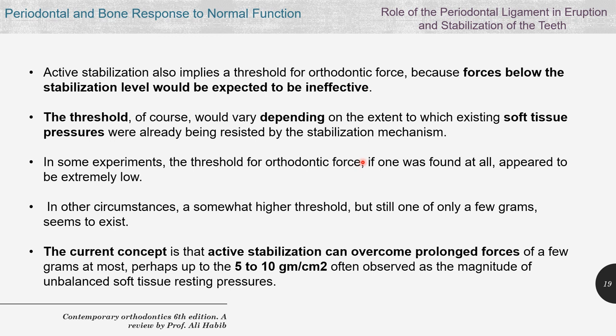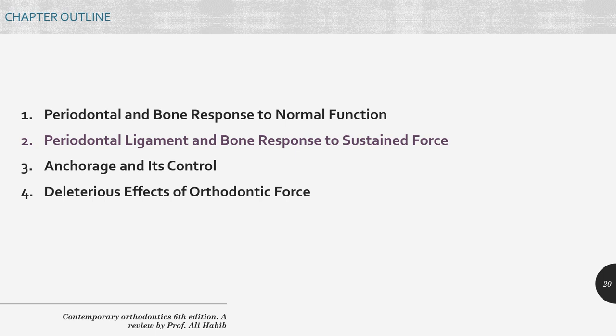The threshold is difficult to measure but depends on the extent to which existing soft tissue pressures were already being resisted by the stabilization mechanism. Experiments found it to be extremely low, in the range of a few grams — perhaps up to 5 to 10 grams per square centimeter, which is often observed as the magnitude of unbalanced soft tissue resting pressure. This concludes the first part of the chapter.